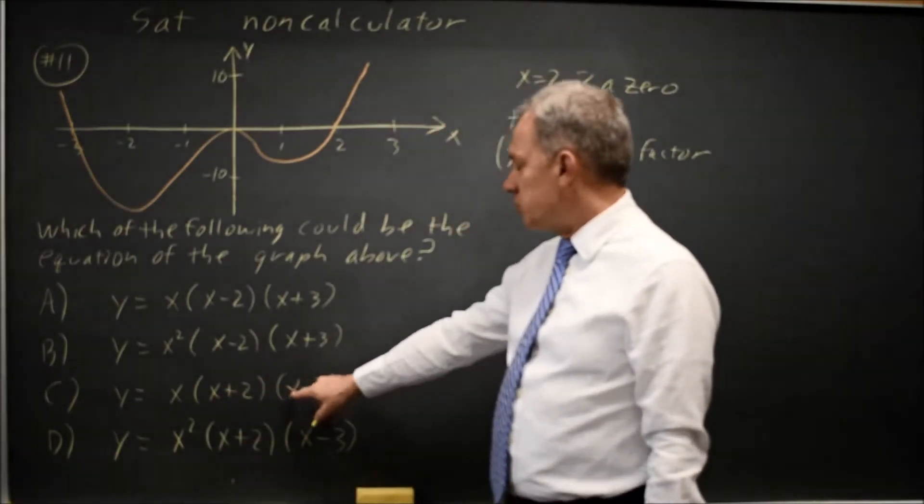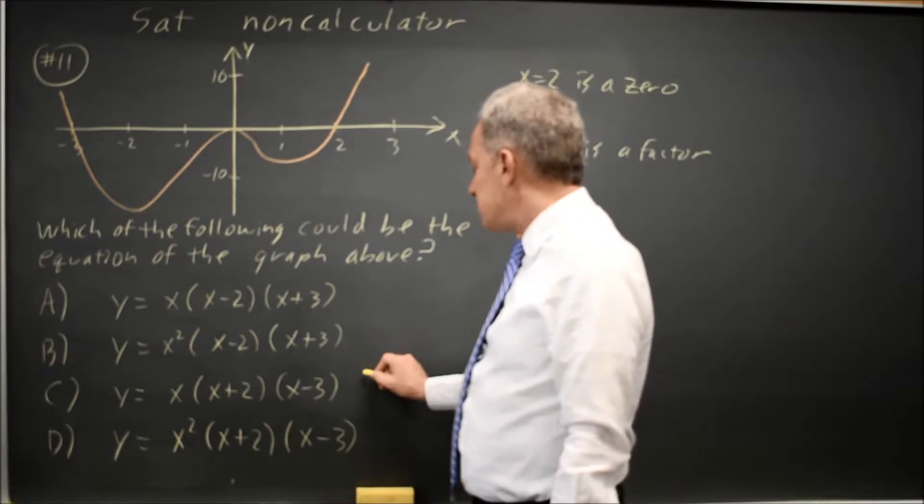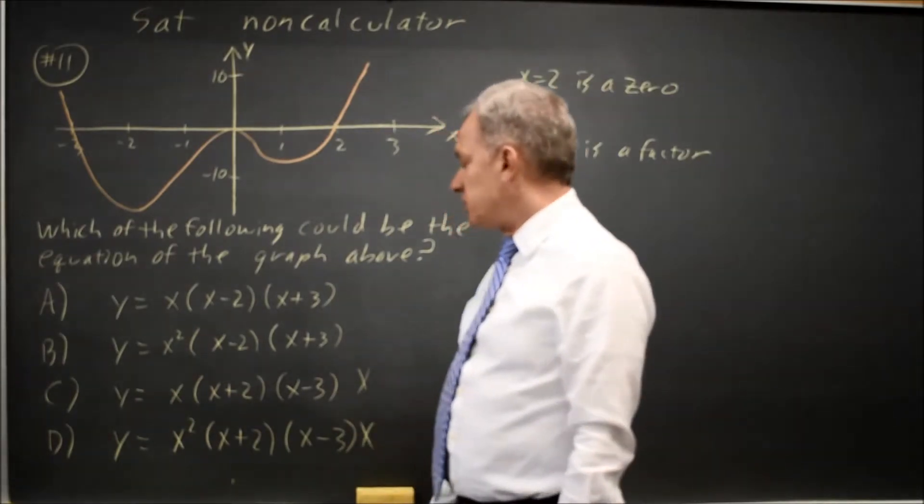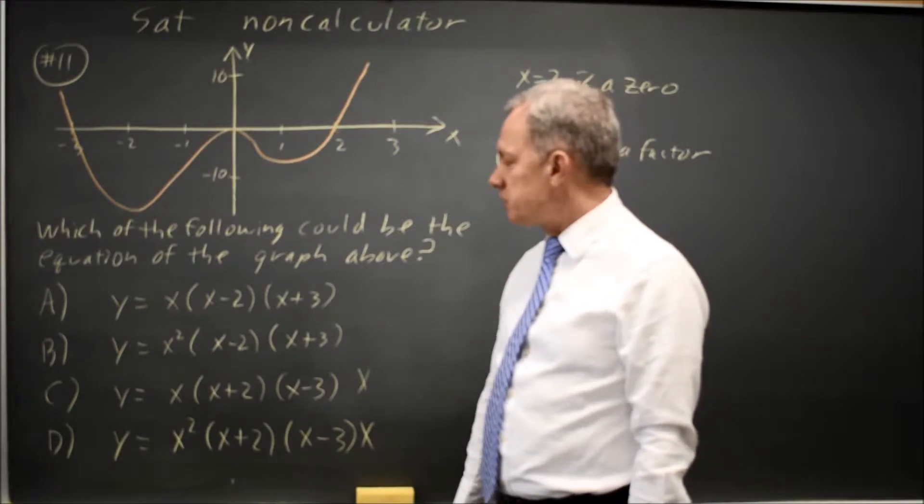Here, 2 plus 2 is 4, 2 minus 3 is negative 1, times 2. That doesn't give me 0, and this doesn't give me 0. So it's x minus 2, not x plus 2, and 2 is a zero.